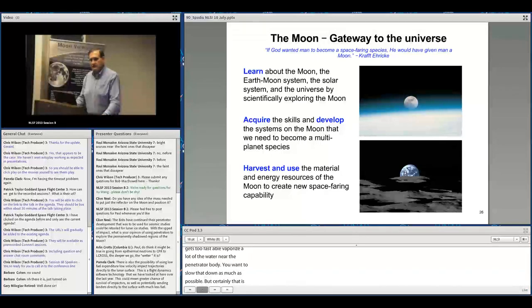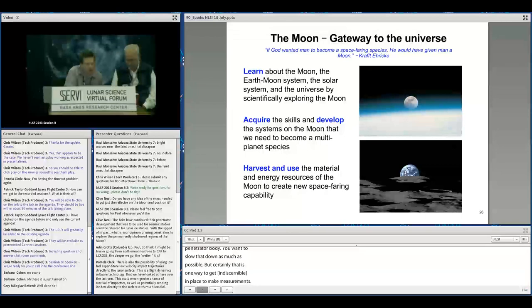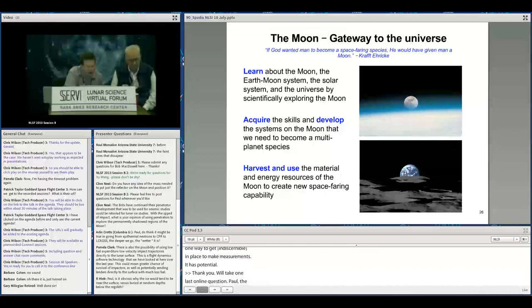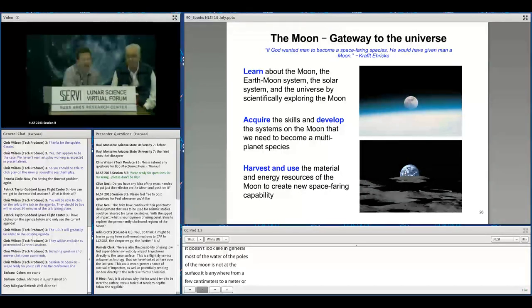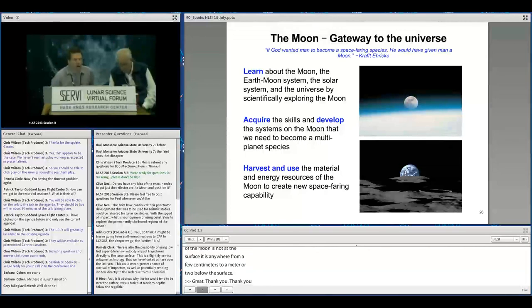Paul responds it depends on emplacement speed—too fast will vaporize water near the penetrator body, so you want to slow it down. But certainly it's one way to get hard landers in place for in-situ measurements. Final question about whether going deeper means wetter conditions—Paul says all techniques measure different things, but most water at the poles appears to be a few centimeters to a meter or two below the surface.